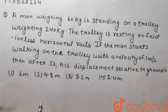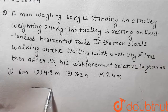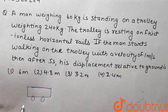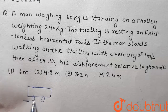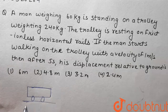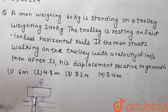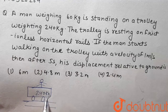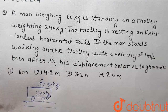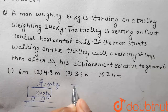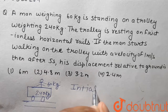Let's see what the situation tells us. A man is on a trolley, resting on frictionless horizontal rails. The trolley weight is 240 kg and the man weight is 60 kg. The whole system has no external force, so the initial velocity is 0, and the center of mass velocity will remain 0.